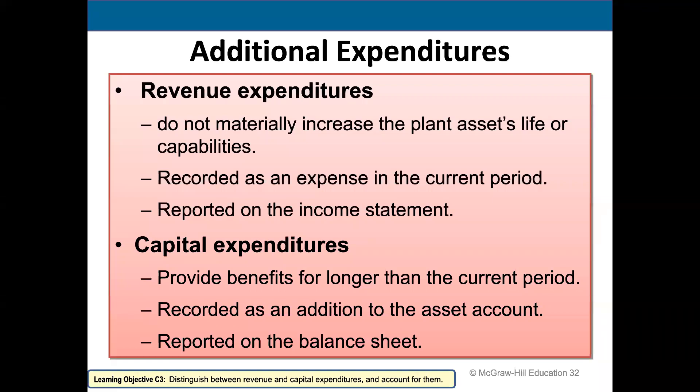Another thing we need to consider when dealing with plant assets is how do we account for additional expenditures on those assets. We've learned how to account for the cost of an asset and how to depreciate its cost over the useful life. But what do we do if we spend additional money on the asset? We have to figure out what was the nature of the expenditure. There are two types: revenue expenditures and capital expenditures.